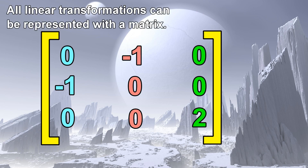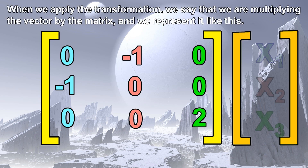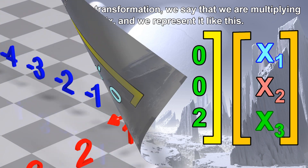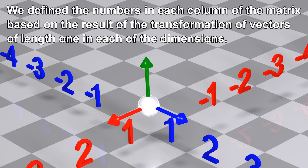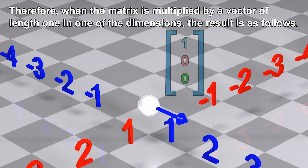All linear transformations can be represented with a matrix. When we apply the transformation, we say that we are multiplying the vector by the matrix, and we represent it like this. We defined the numbers in each column of the matrix based on the result of the transformation of vectors of length 1 in each of the dimensions. Therefore, when the matrix is multiplied by a vector of length 1 in one of the dimensions, the result is as follows.